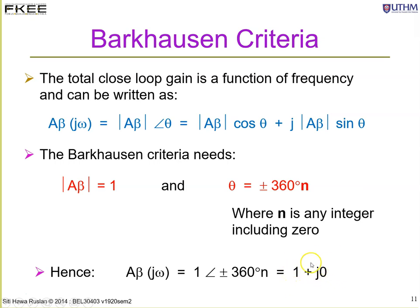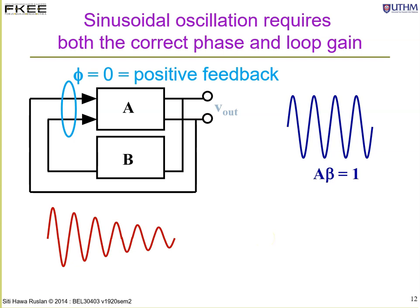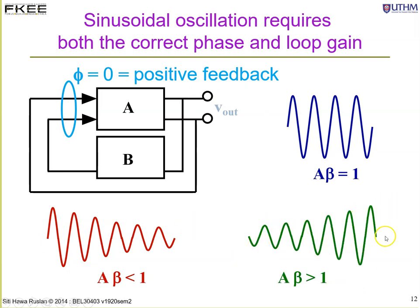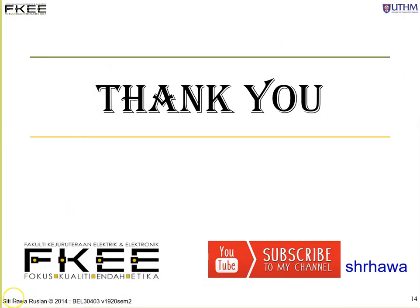To summarize: beta multiplied by A must equal 1 to produce a sinusoidal waveform. If beta·A is less than 1, the signal dies out; if it is greater than 1, the signal grows until clipping occurs. So we need exactly beta·A equals 1, and the total phase shift around the loop must equal 0 or 360 degrees. With that, we'll continue with the next topic in the next video.